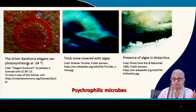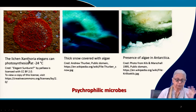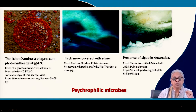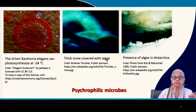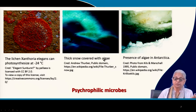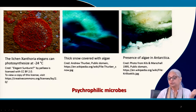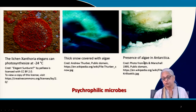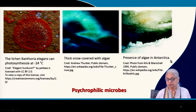Here we see lichen — a mutualistic relationship between algae and fungi — a photosynthetic lichen growing at minus 24 degrees centigrade. This is thick snow covered with algae. It is not just bacteria that can be psychrophilic; algae can also grow in arctic as well as antarctic regions.